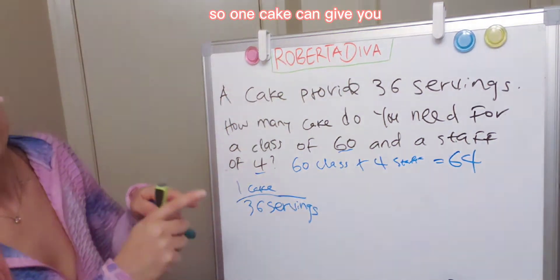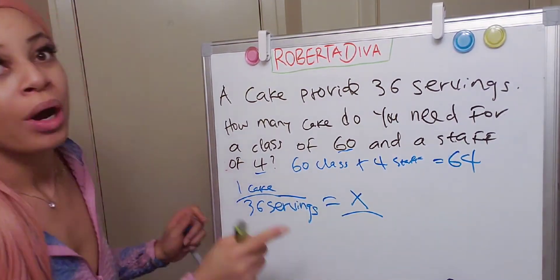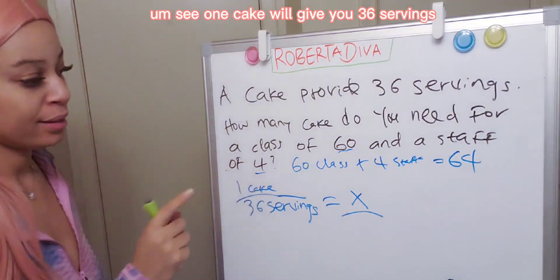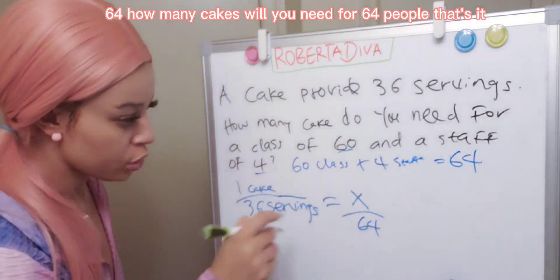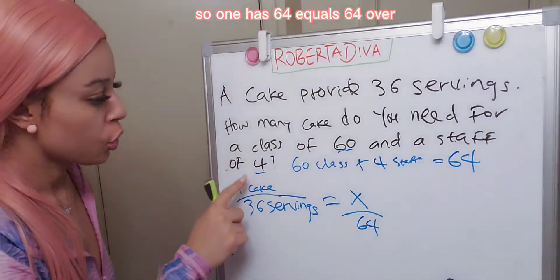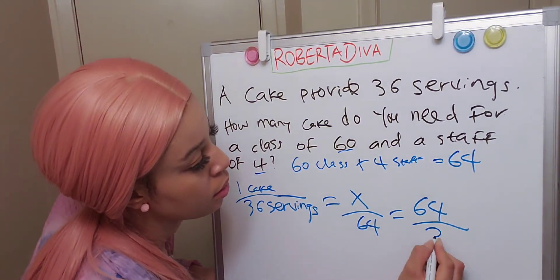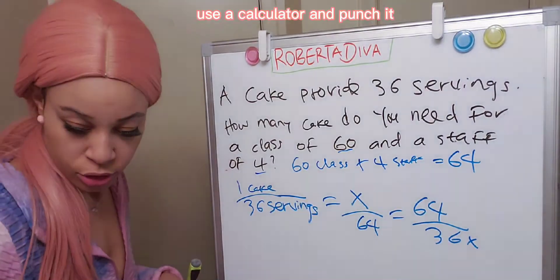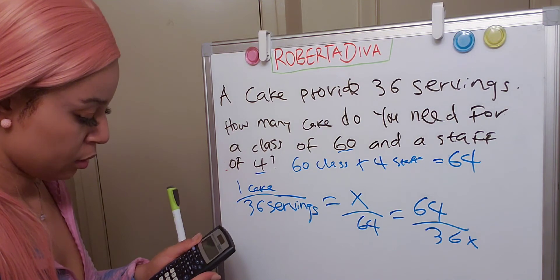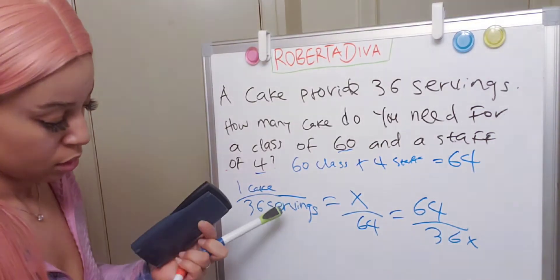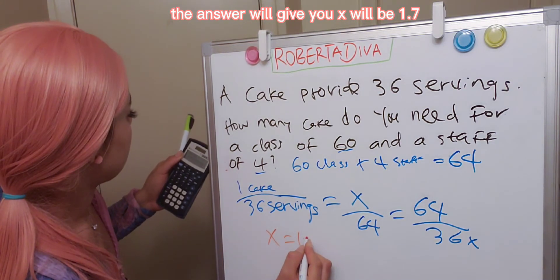One cake can give you 36 servings, so how many cakes will you need for 64 people? So: 1 cake is to 36 servings as X cakes is to 64 people. That gives us 64 over 36 equals X. Use the calculator — 64 divided by 36 gives you X equals 1.7...